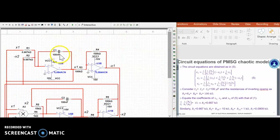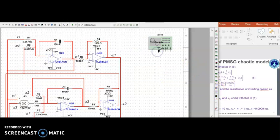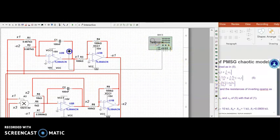Now, secondly, if we want to implement fractional order circuits. Now, suppose I want to see the output between x1 and x2 plane. So I run and see what I get. The oscilloscope result over here.